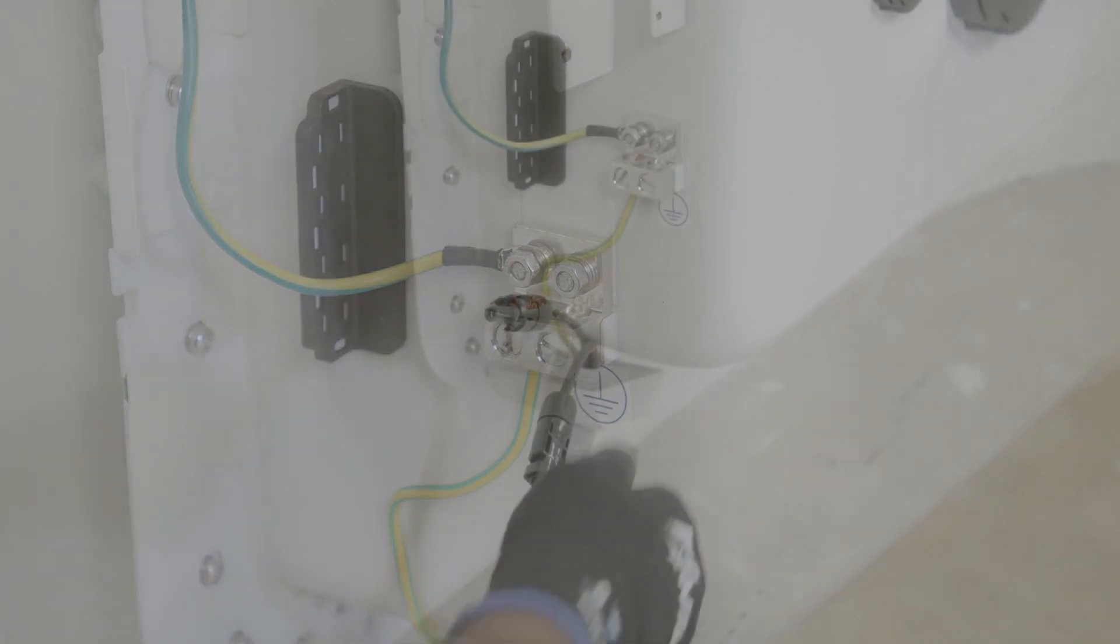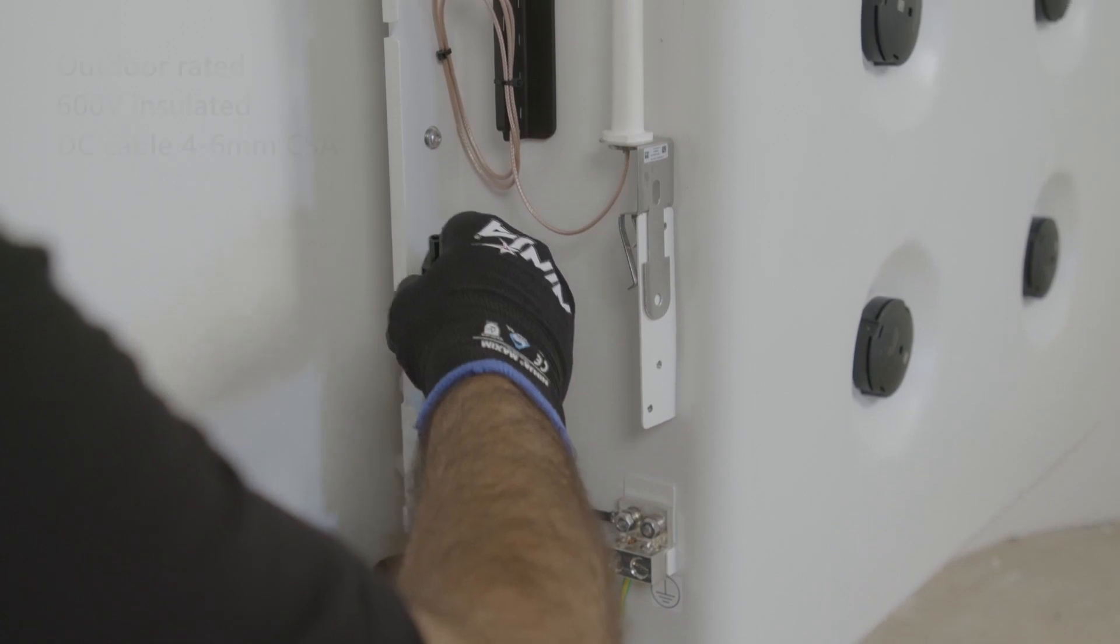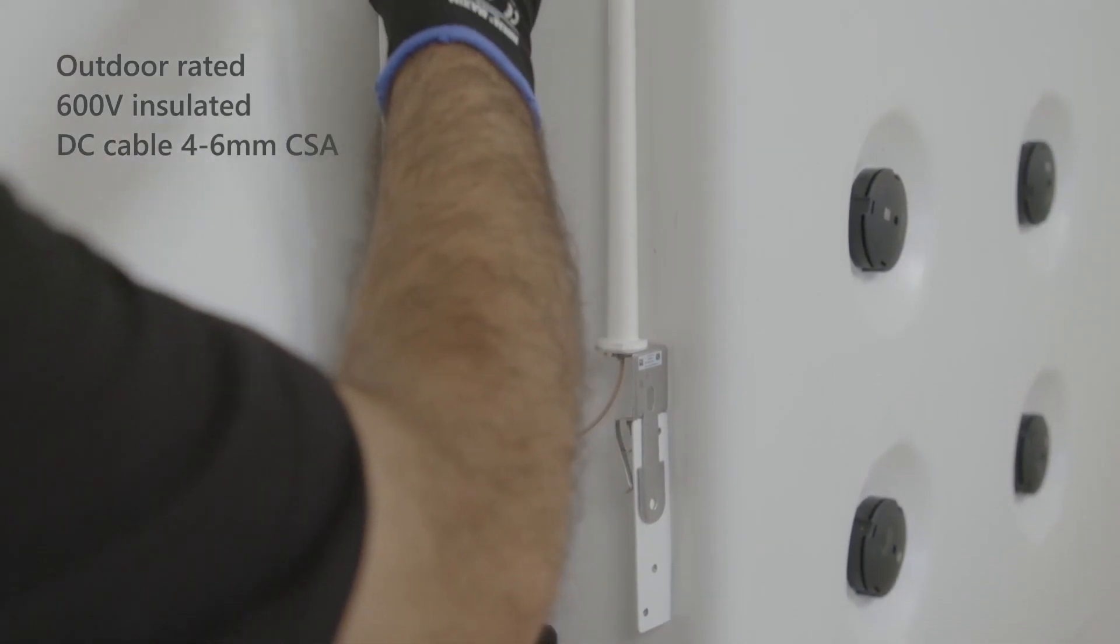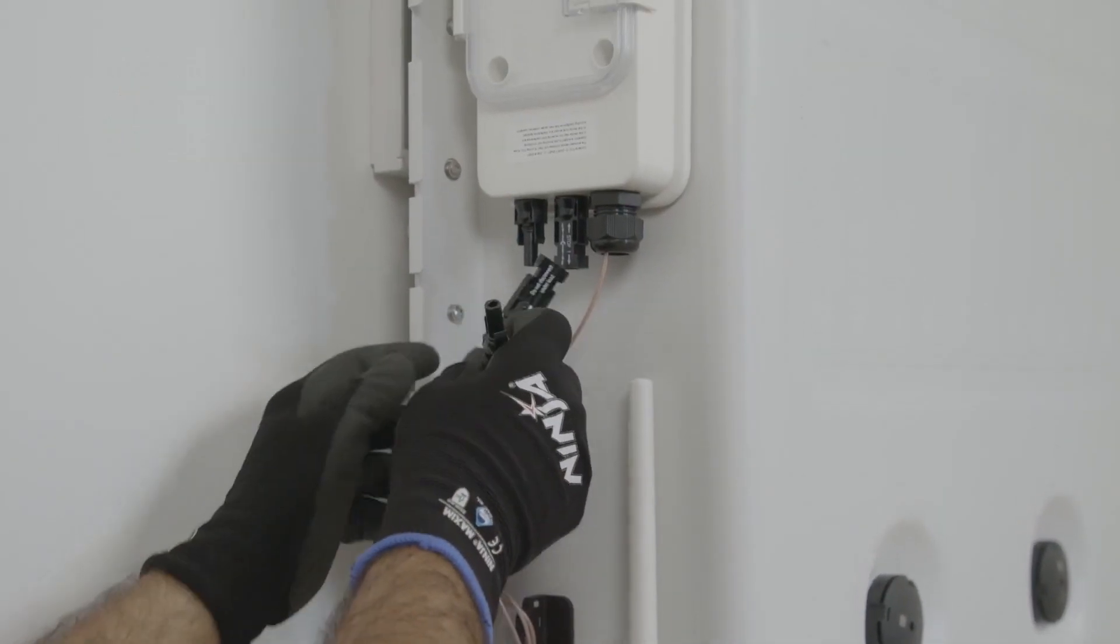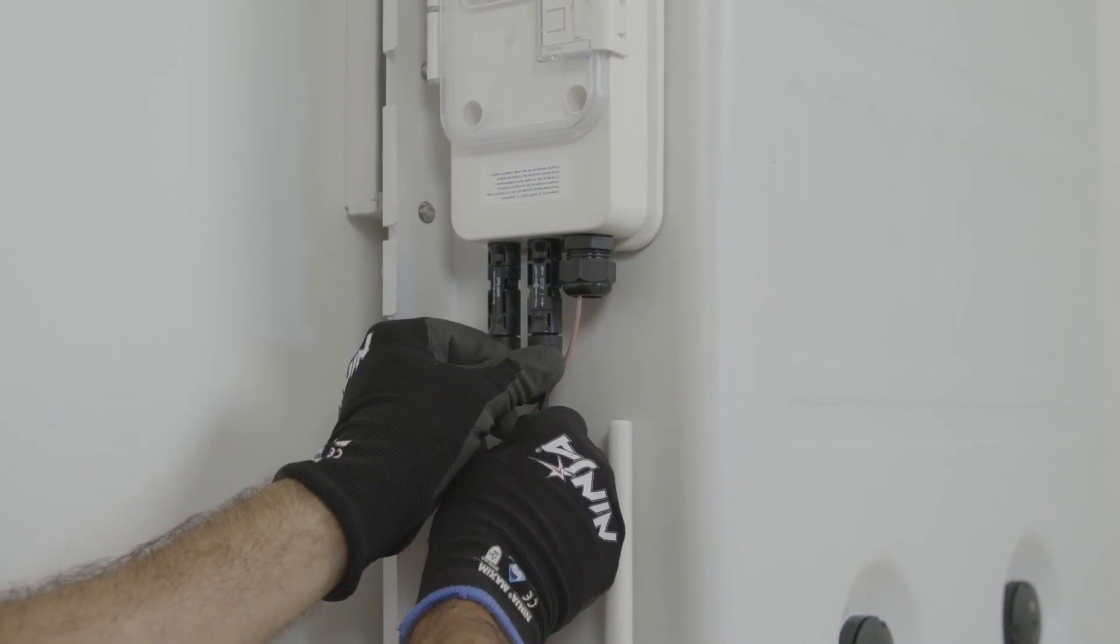Once the earth is in we can then fix the DC. With the battery comes supplied two MC4 connections, so simply connect those to suitable PVDC 600 volt rated cable and connect them into the positive and negative associated terminals.